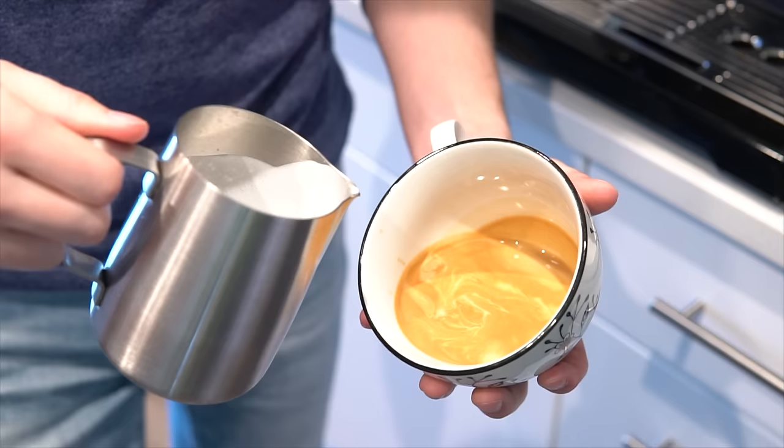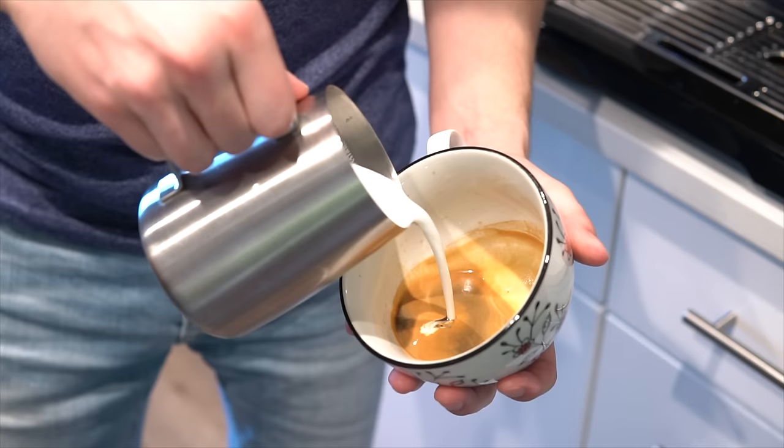Start your pour by having the pitcher an inch or two above the coffee, pouring directly into the center to allow the milk to drop straight to the bottom of the drink without disturbing the crema.